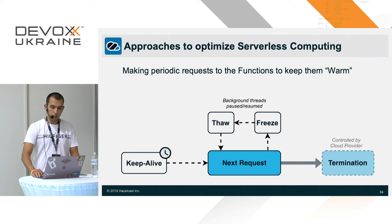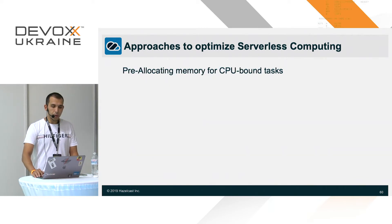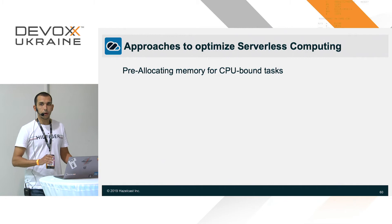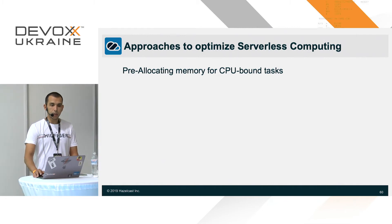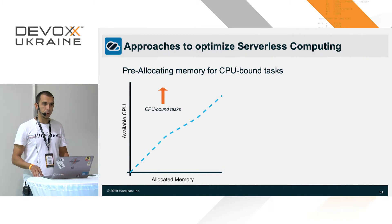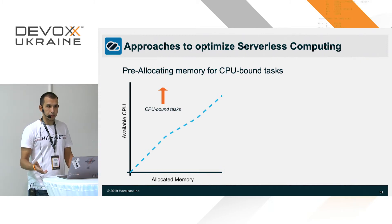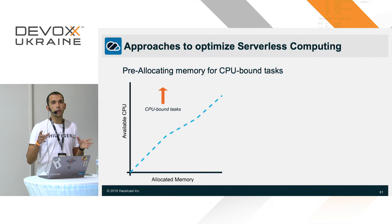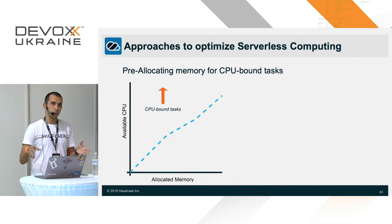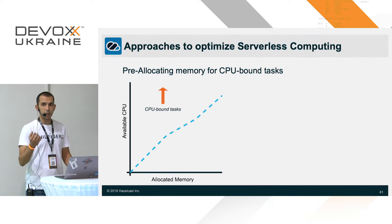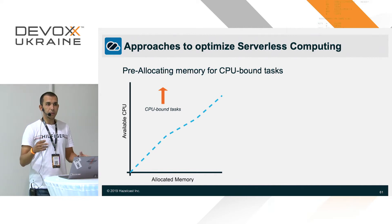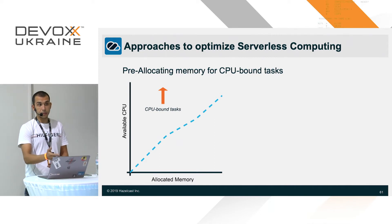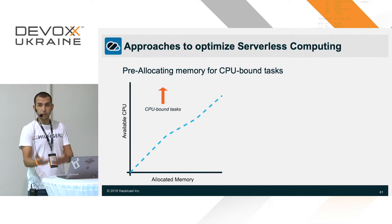Pre-allocate memory for CPU-bound tasks. If you're doing encoding, decoding, or encryption, Lambda function CPU performance is bound to the memory you allocate. In AWS, if you allocate more than 1.8 gigabytes of memory you get a multi-core Lambda function. Pre-allocating more memory means the function completes faster, which means you pay less — because in Function as a Service you pay for processing time.